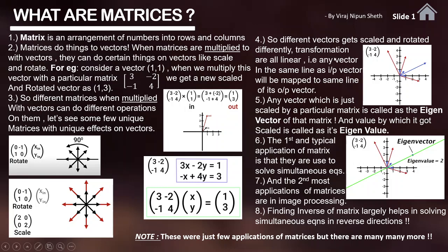All vectors which lie on the same line will get scaled and rotated, or both, such that their output vectors will again lie on the same line. So let's say you have multiple vectors lying along this blue line — when they are multiplied with this particular matrix, all of them will have different outputs, but what's common is that their outputs will always lie along this red line. This is what I mean by the transformations being linear.